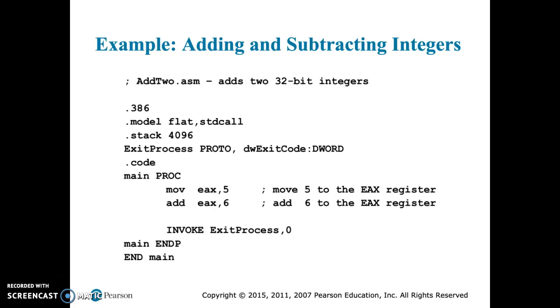So this one we can see is basically adding two integers. You can see in the main procedure, there's basically just two steps. We have a move, which is essentially putting a particular number into one of the registers. In this case, the EAX register. So we are moving the number five into the EAX register in the first step.